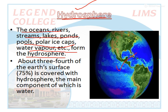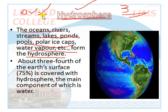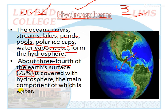Water exists in three states: solid, liquid, and gas. Ice is the solid form, water is the liquid form, and vapor is the gaseous form. Three-fourths of the Earth's surface — 75% — is covered with water, and the rest is covered with land. That is why our planet appears blue in color. The blue part comes from rivers, seas, oceans, glaciers, rain, and ice caps — all included in the hydrosphere.